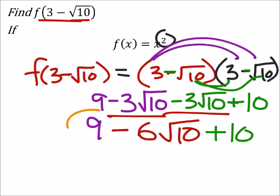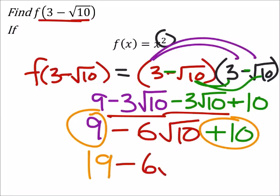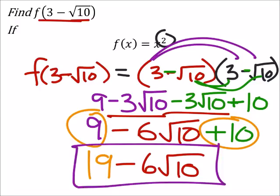The only way to simplify this is to combine the 9 and the 10, which are like terms. That gives us 19 minus 6√10. That's as far as we can simplify this.